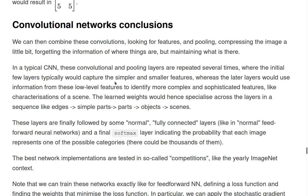The later ones start to get more information from these low-level features and are able to identify more sophisticated, more complex features like the characterization of a sign. The learned weights specialize across layers. The sequence is like: first I have edges or simple features, then simple parts, then parts, then objects, then signs. At this point I can add at the ending of my neural network a normal fully connected dense layer.